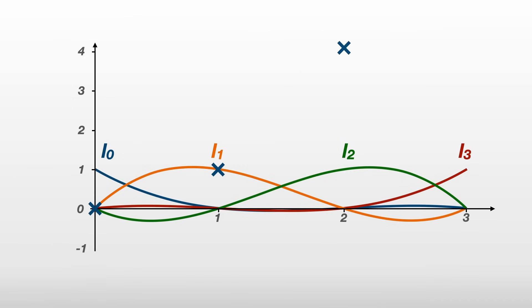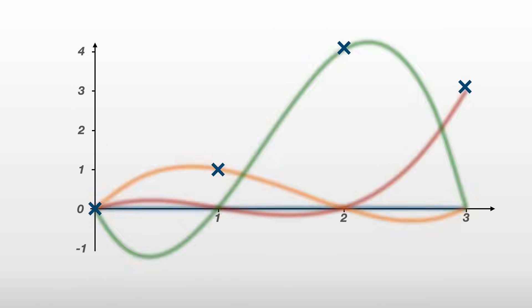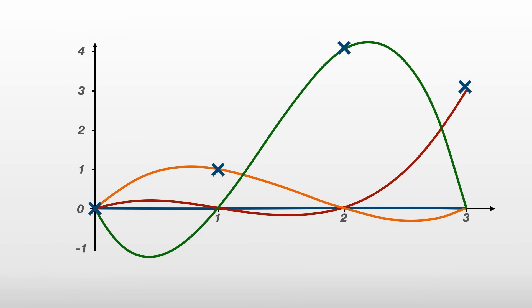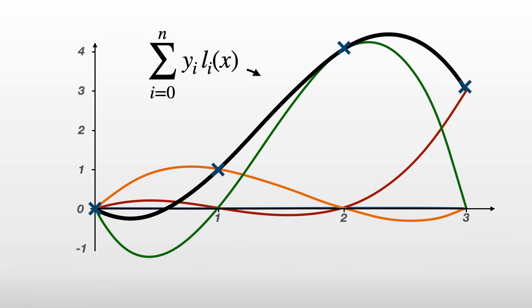Because each Lagrange polynomial only contributes to its own node, we can then just multiply each one by the y value it should have and then add them all together. The resulting polynomial then goes through or interpolates all of the data points.